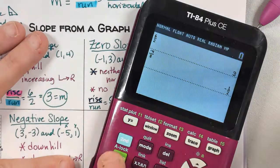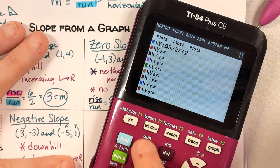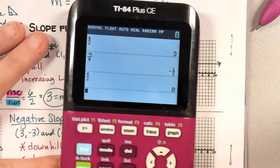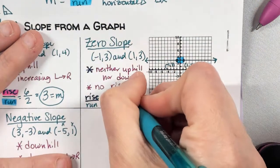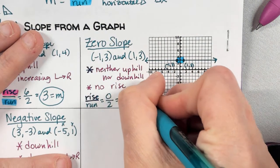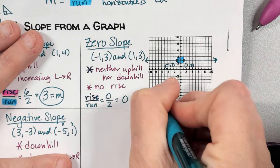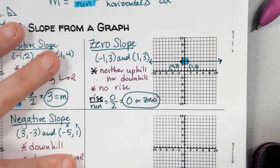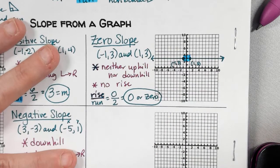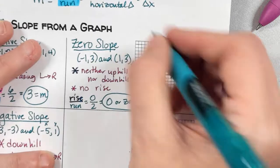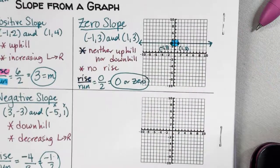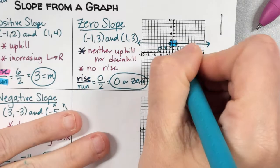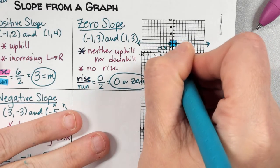If I put zero over two in my calculator, I get zero. So the slope of a horizontal line is zero.